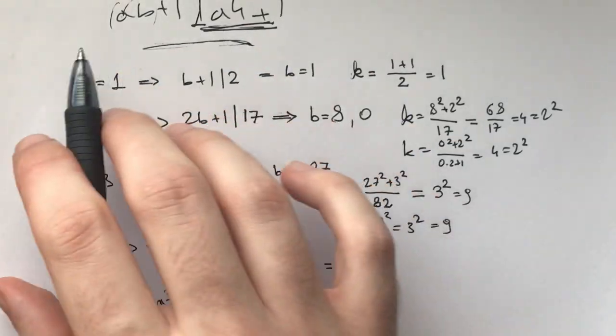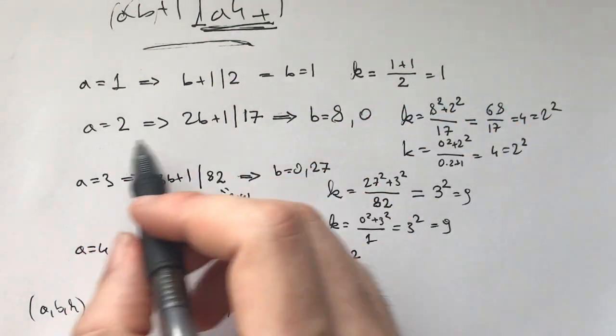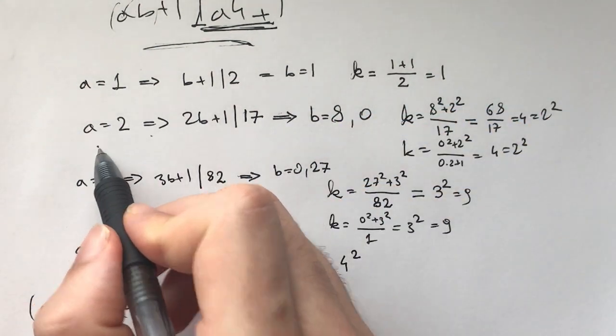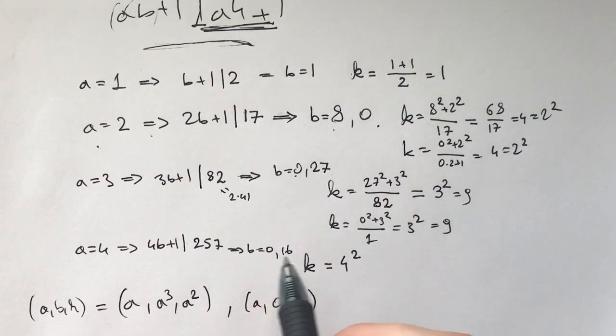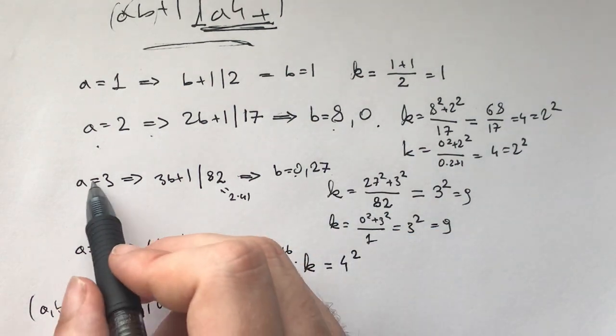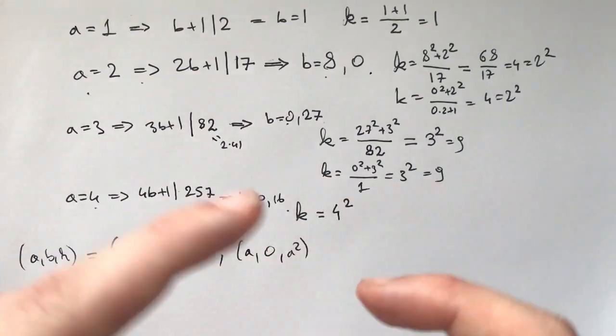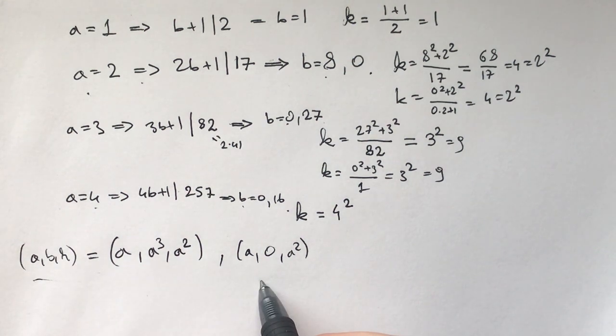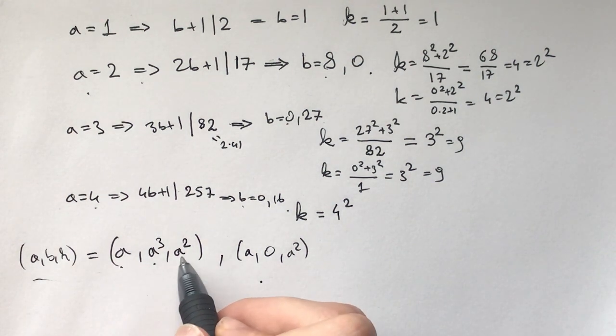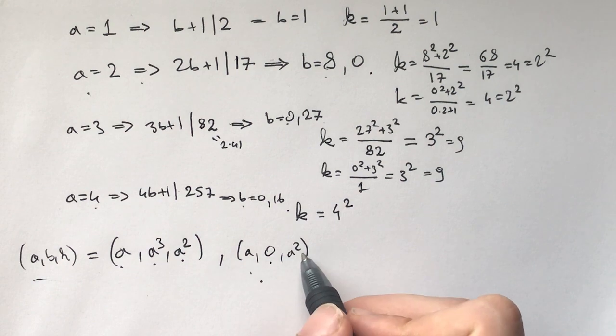The problem solving principle I've told you time and time again. You play around with small numbers and you see if you notice any pattern. So now, let's do that. So just playing around a little bit tells you, like, you see the solutions for a=2. You have b as 8 or 0, then 0, 27, 0, 16, 4. And you get the sense, wait, are these the only solutions? Like, a, a³, a², a, 0, and a².